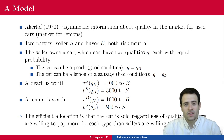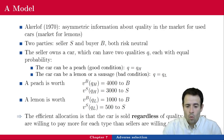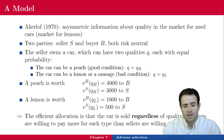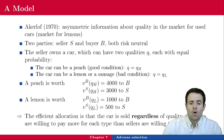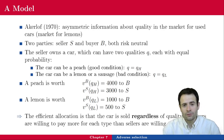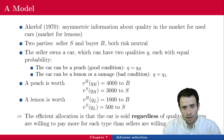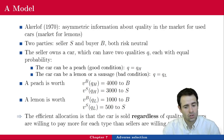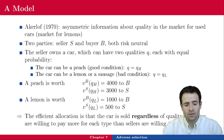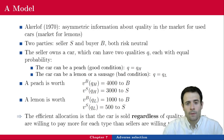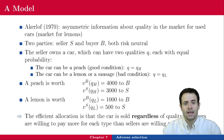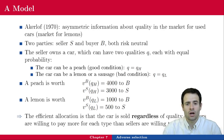The efficient allocation is that the car is sold regardless of quality, as buyers are willing to pay more for each type than sellers are willing to sell them for. Why is it efficient? Because we can make somebody better off without making somebody worse off. If each car is sold, we can make the buyer better off with a car and the seller better off with the money from selling the car. So, regardless of the quality of the car, it is efficient for each car to be sold.